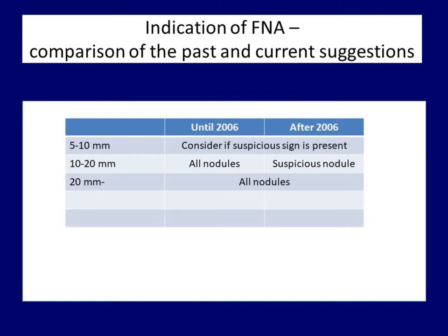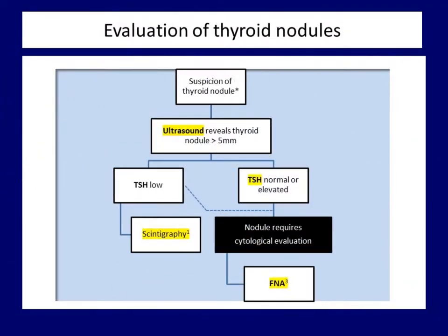Secondly, the newer approach, backed by ACR TIRADS, tries to balance between an optimal sensitivity and optimal specificity, and accepts that some thyroid cancers larger than 1 cm are not recognized. I do not want to go deeper into the advantages and disadvantages of the two approaches now. Here I would just like to draw attention to the fact that in the case of the older approach, the ultrasound features discussed earlier have very limited role in terms of the cytological indication. If one thinks that applying the newer suggestions is risky and it is worth performing FNA in every nodule larger than 1 cm, it has seemingly wasted time studying the previous chapters.